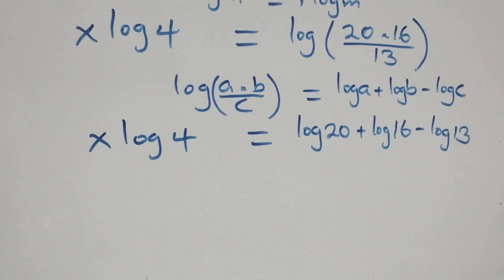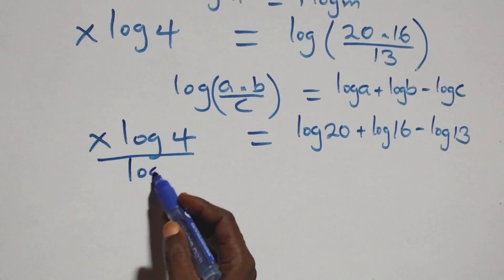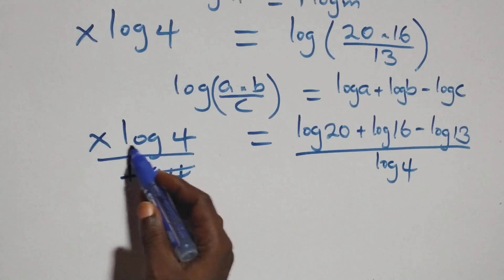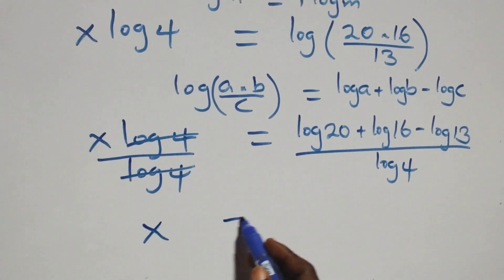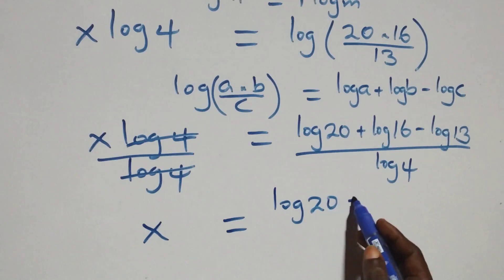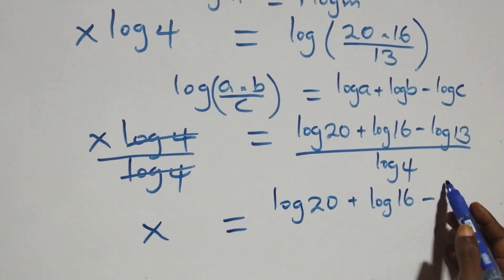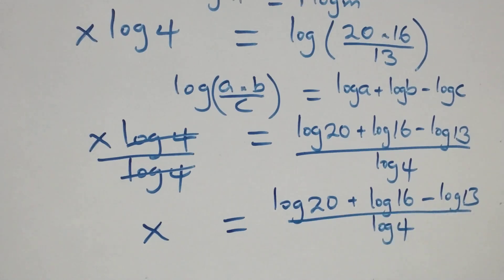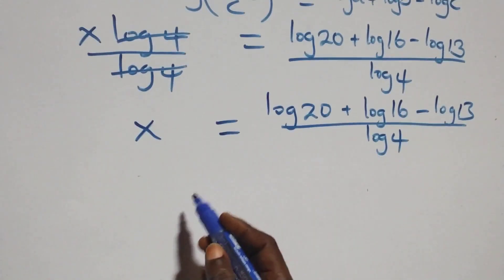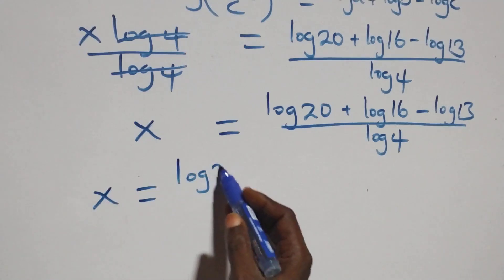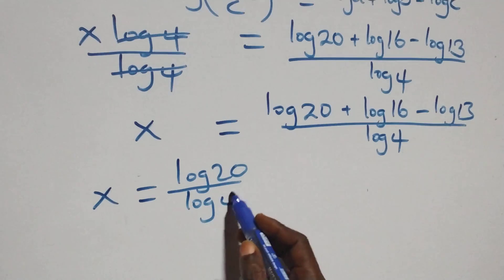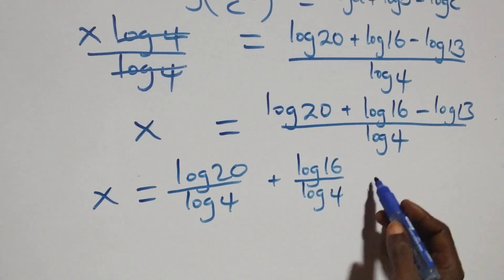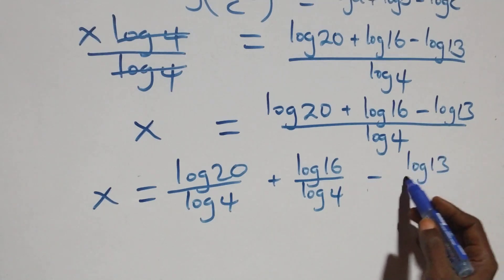The next step here, we divide both sides by log 4. That is, divide this side by log 4 and also divide this side by log 4, which means log 4 cancels each other. Then we have x equals to log 20 plus log 16 minus log 13, all over log 4. We separate this into three fractions: x equals to log 20 over log 4, plus log 16 over log 4, minus log 13 over log 4.